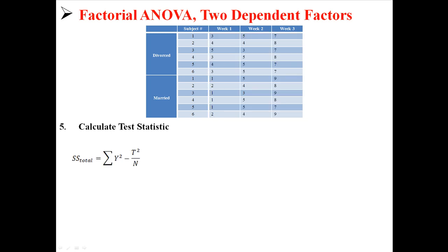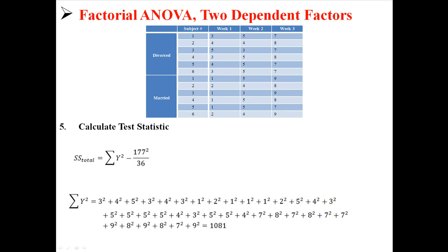Now we calculate SS total, which is straightforward. We already know T²/N; we just need the sum of all y squared — every single score squared and then added together. Our sum of y squared is 1,081, so our sum of squares total is 210.75.